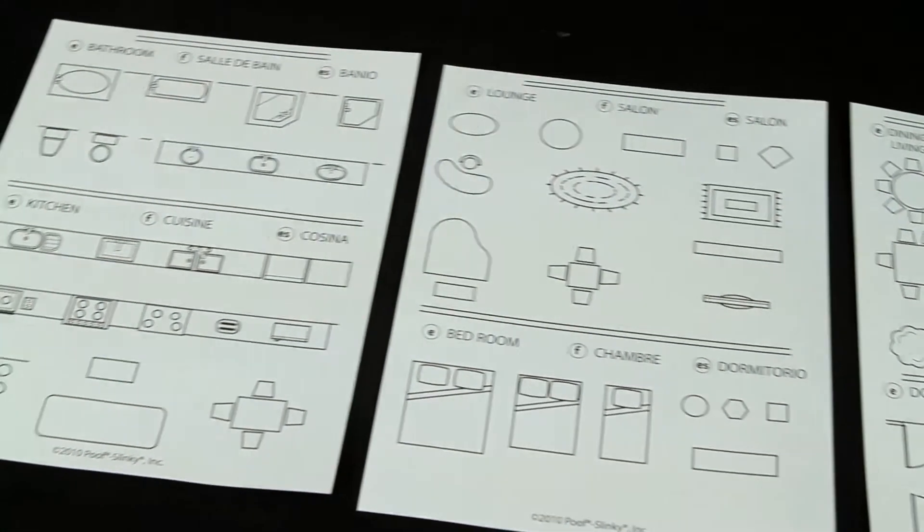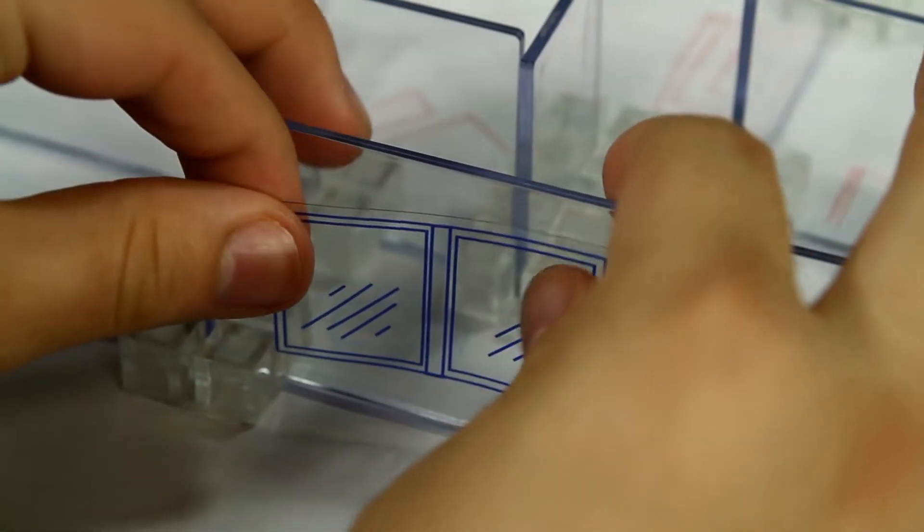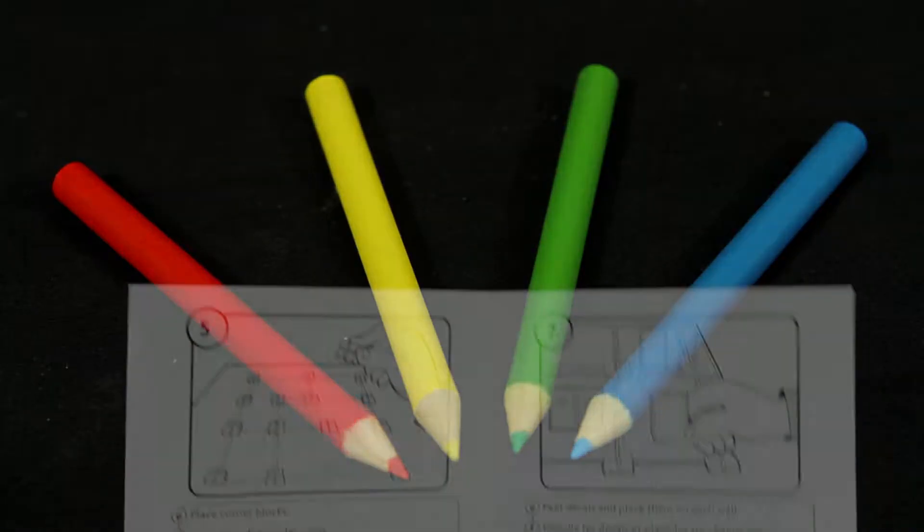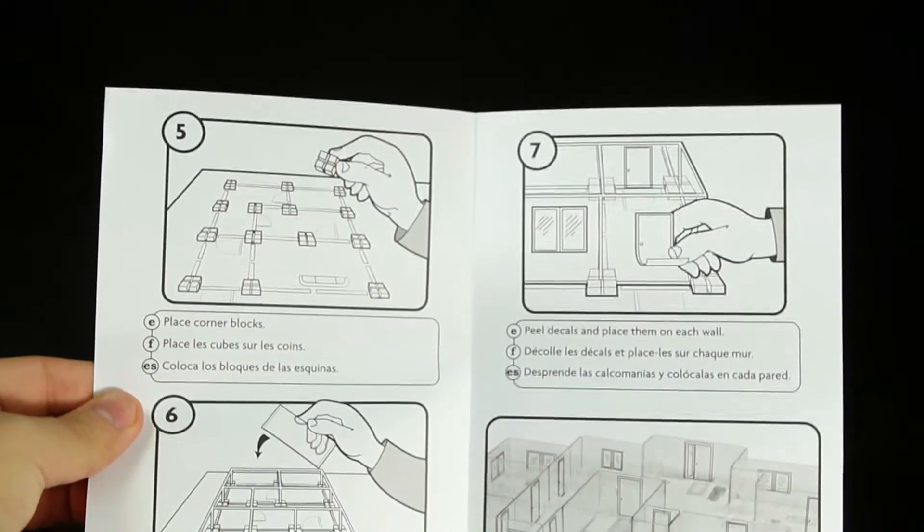With this kit, you'll receive 9 room templates, 6 large pieces of paper, furniture guides, loads of acrylic walls and blocks, peel and stick doors and windows, a giant acrylic work mat, colored pencils, and instructions to get you started building your 3D model.